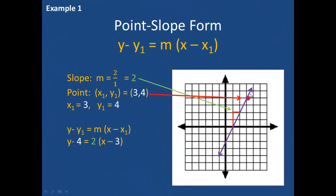In this example I have a line shown in purple and I need to write the equation. I can use the slope which I can find using rise over run, and I can see that it is 2 over 1, or a slope of 2. I can pick any point on the line. So to write this equation in point-slope form, I will substitute 2 for m, 3 for x1, and 4 for y1. My equation is y minus 4 equals 2 times x minus 3.